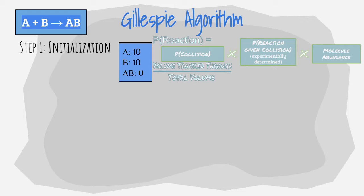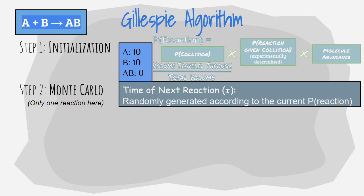In initialization, the number of molecules in a system and probabilities are set. Next is the Monte Carlo step, where random numbers are carefully generated according to the reaction probabilities to determine when the next reaction occurs. The simulation then updates the time by the randomly generated amount from step 2 and updates the number of molecules based on the reaction that occurred.